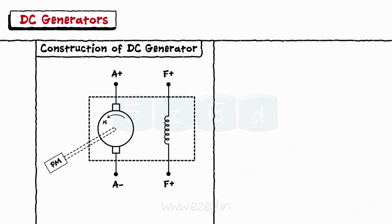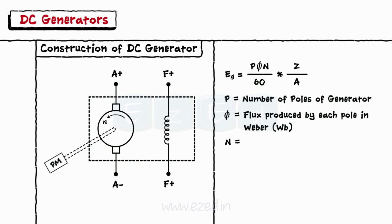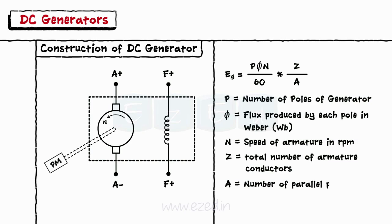The EMF equation for the DC generator is given by EG equals P phi N upon 60 into Z upon A, where P equals number of poles of generator, phi equals flux produced by each pole in Weber, N equals speed of armature in RPM, Z equals total number of armature conductors, and A equals number of parallel paths in which the total number of conductors are divided. The symbolic representation of DC generator is as shown.